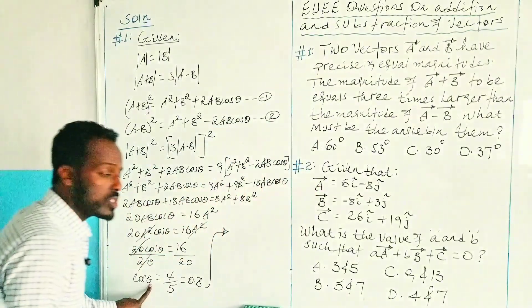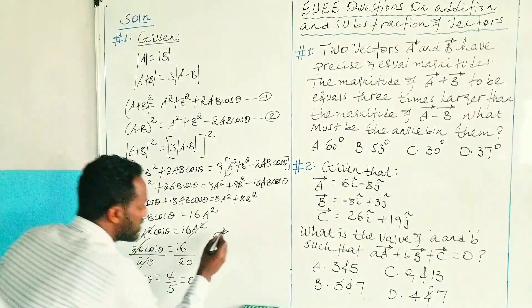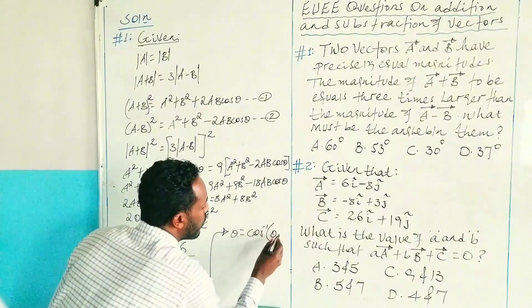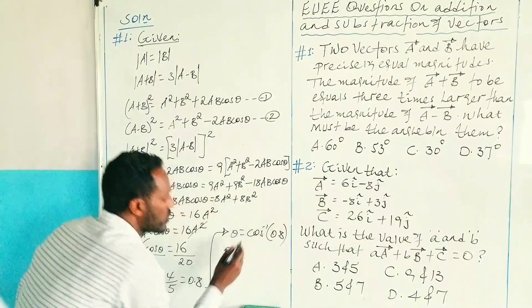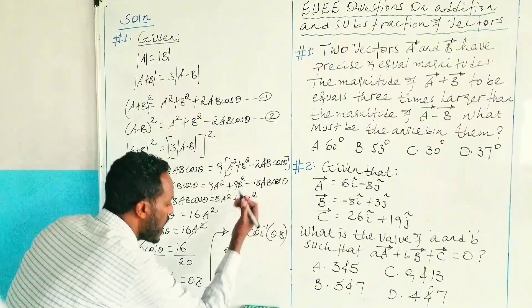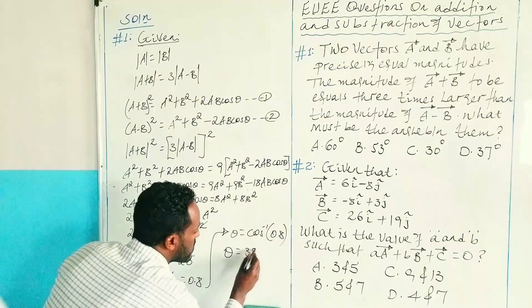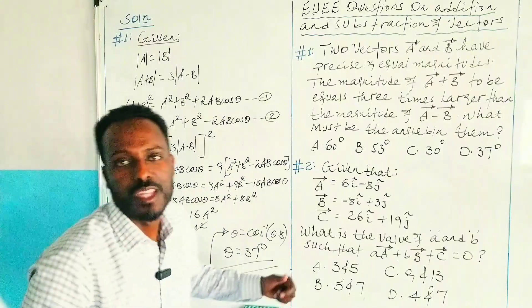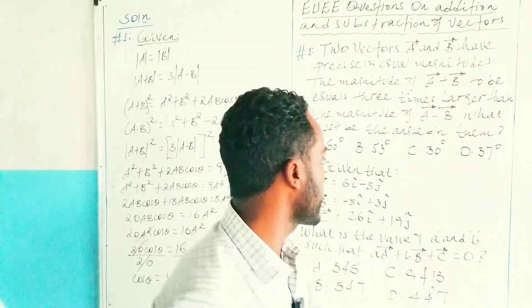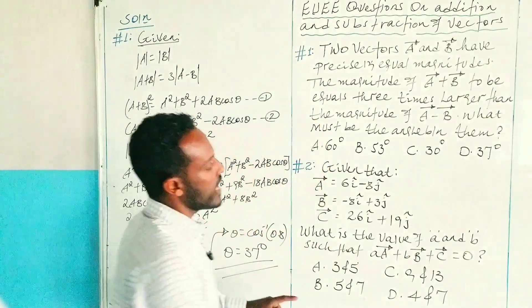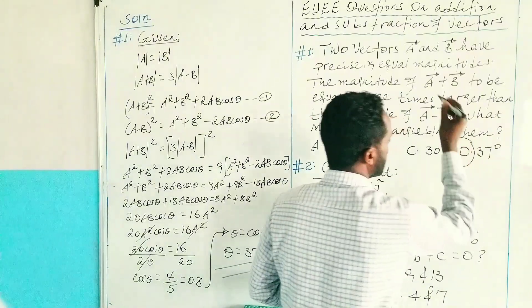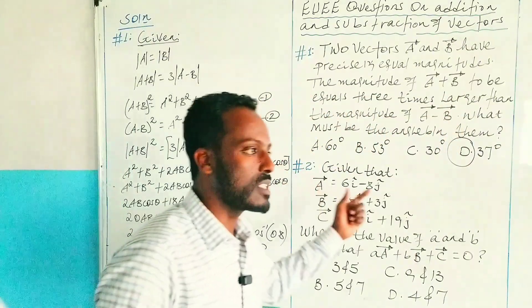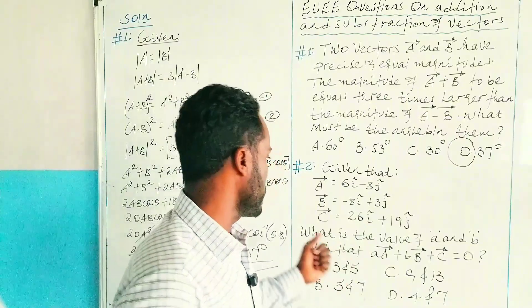Using the inverse function, theta equals cos inverse of 0.8. And cos inverse of 0.8 gives us 37 degrees. So the angle between the two vectors A and B is 37 degrees. The answer is D. This is all about the first exam question.